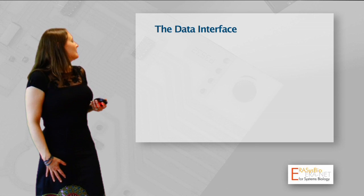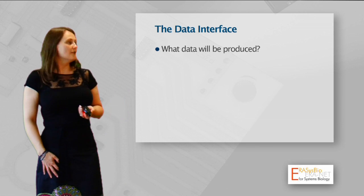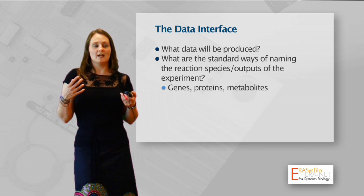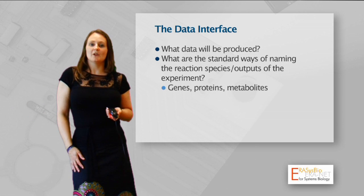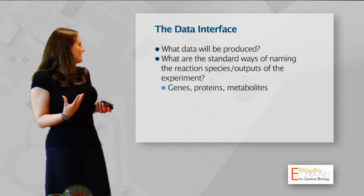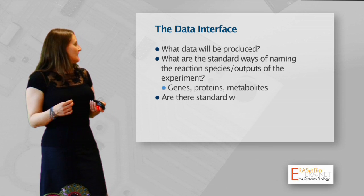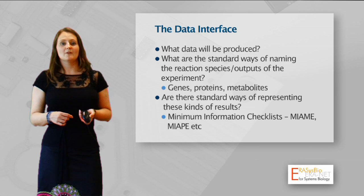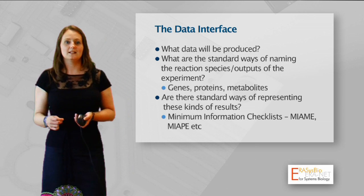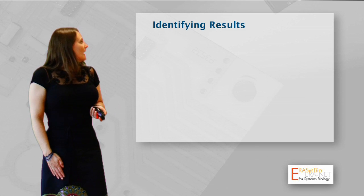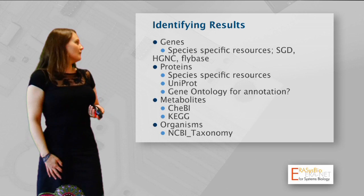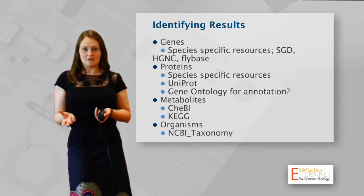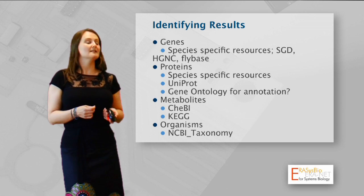Coming back to the data interface, you have to think about what data will be produced during your experiment and what the standard ways of naming those pieces of data are. For a gene list, do you want to use your own local names, or a community-agreed standard naming scheme? The same applies for proteins, metabolites, and similar entities. Sometimes there will be a standard way of representing certain types of data — a minimum information model checklist, for example. If you have microarray data, you might specify in your SOP that it should be represented in a MIAME-compliant form. Sometimes there are several different community standard naming schemes to choose from; as long as you stick to one and are consistent, that is a good approach.